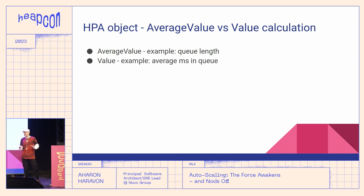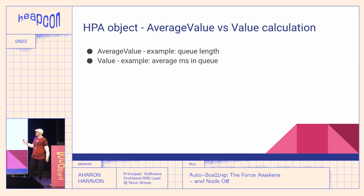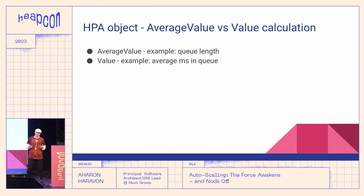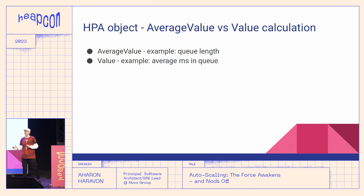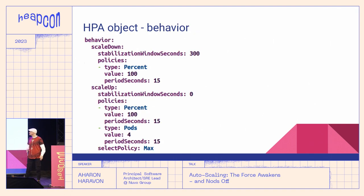KEDA uses the external metric type and can have two target types: average value and value. We use average value target type when our metric is not already averaged — for example, message queue length. We use value target type when the metric is already averaged by the external system — for example, average milliseconds a message spends in the queue. Since it's already averaged, the HPA controller should not average it again, so we use the value target type.